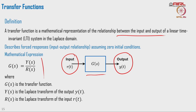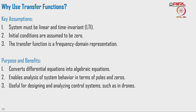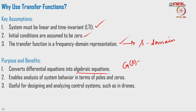Y(s) is the Laplace transform of the output y(t) and R(s) is the Laplace transform of input r(t). Key assumptions are: the system must be linear and time-invariant, and initial conditions must be zero. The transfer function is a frequency domain or S domain representation. It converts differential equations into algebraic equations. G(s) equals Y(s)/R(s), sometimes written as Y(s)/U(s), giving us a ratio of two polynomials. It enables analysis of system behavior in terms of poles and zeros.